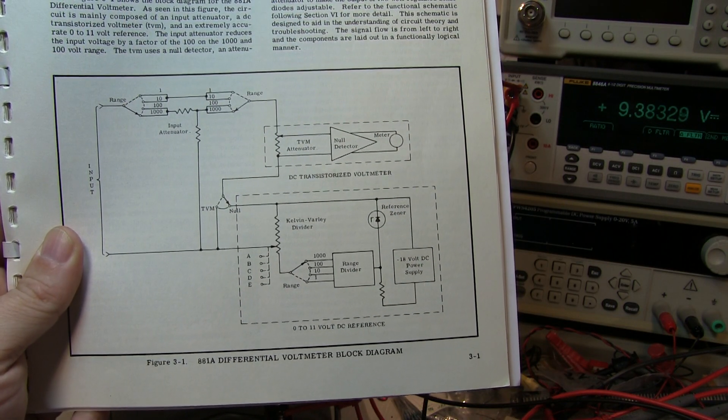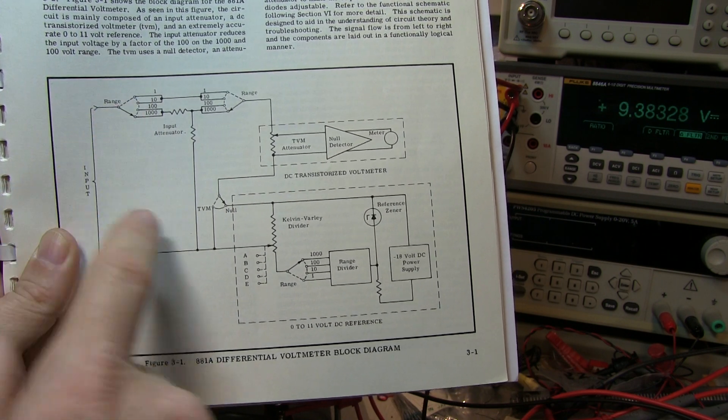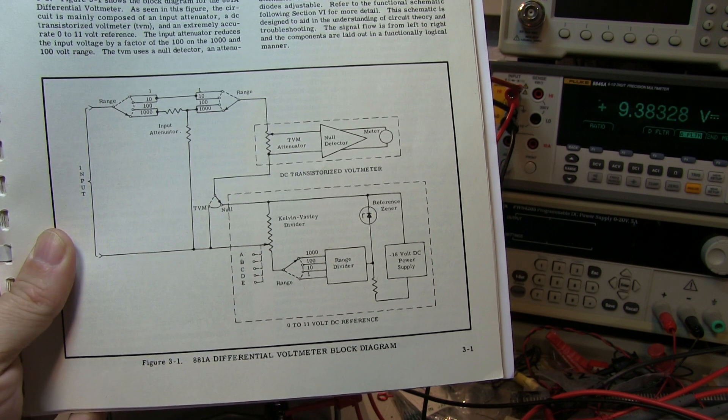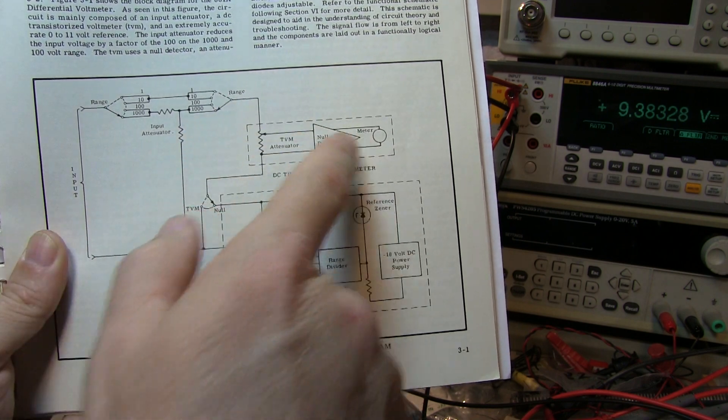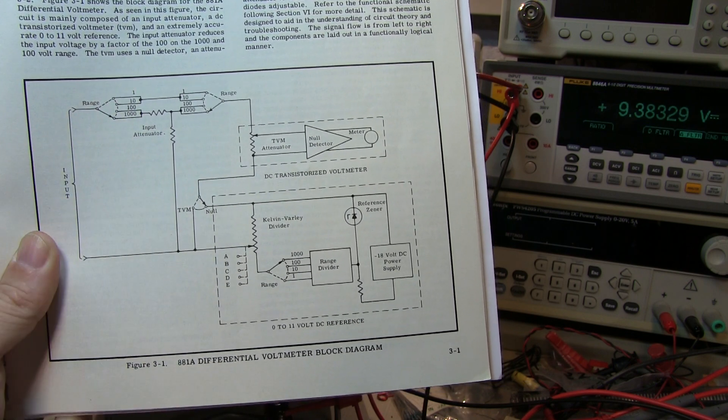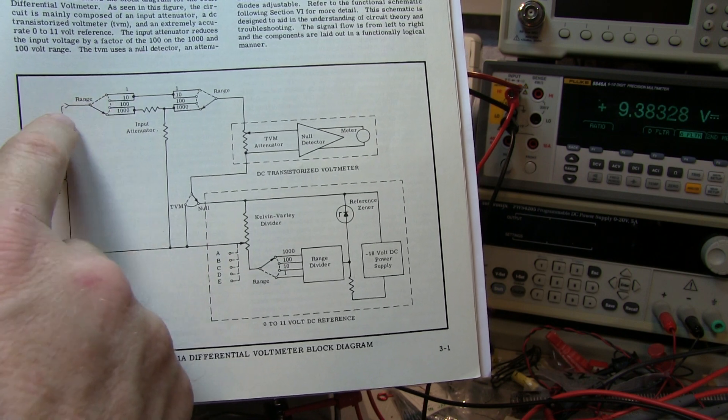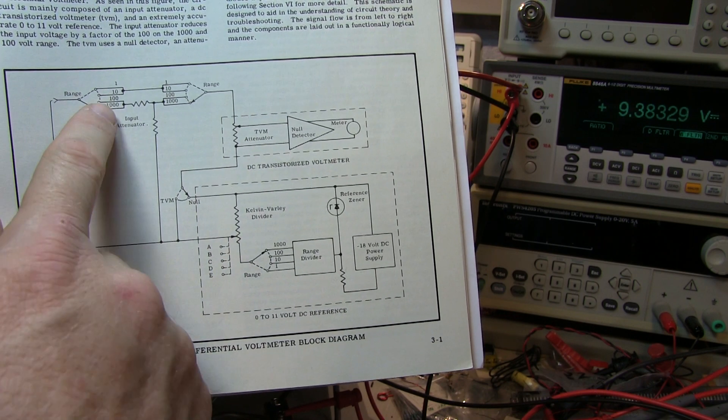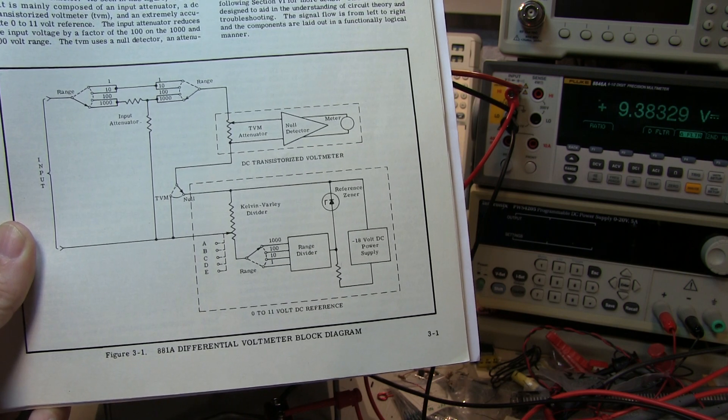One more very interesting thing about this instrument is that for the 1 volt and 10 volt ranges, when you reach a null on the meter, the input impedance of the Fluke differential voltmeter is infinite because essentially you're matching the same voltage on the other side at the null position. So no current essentially flows at the null, so there's really no current drawn at all at the inputs. It's only on the 100 and 1000 volt ranges where the input signal goes through a divider that has a 10 megaohm input impedance.